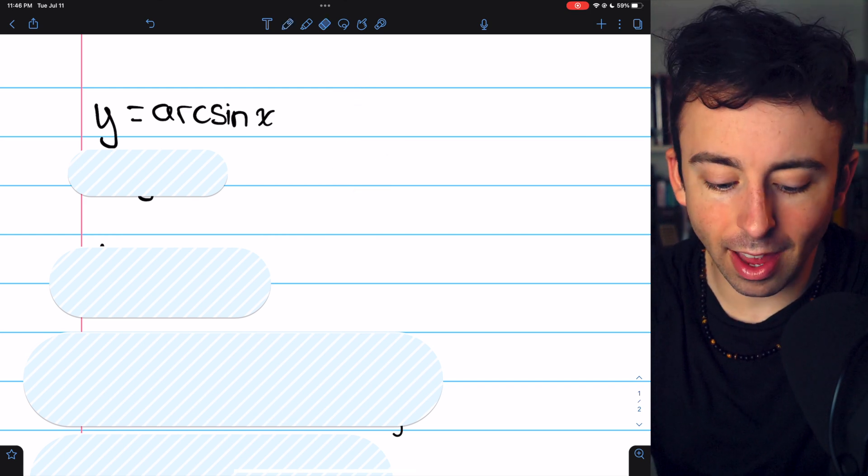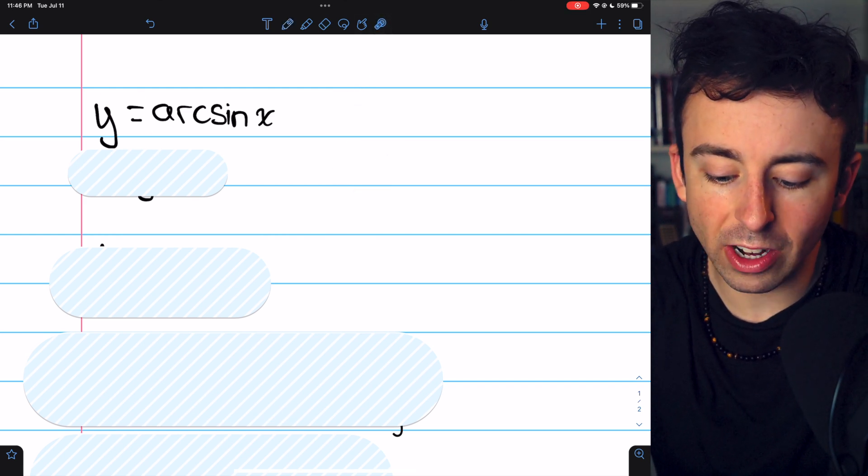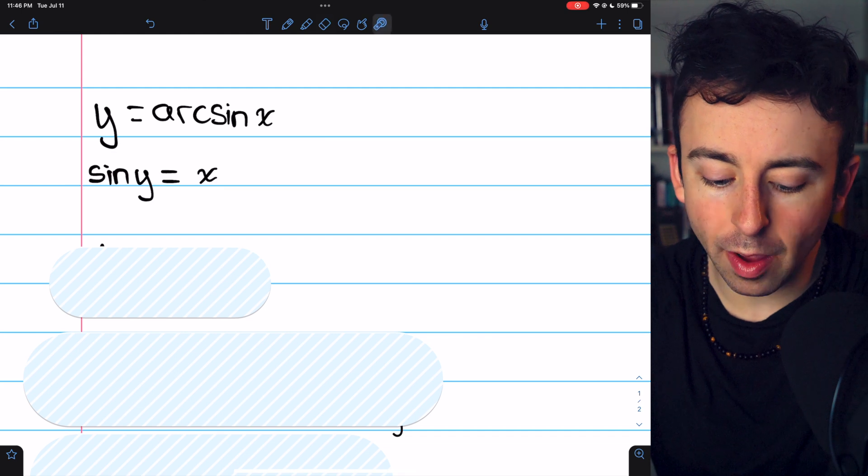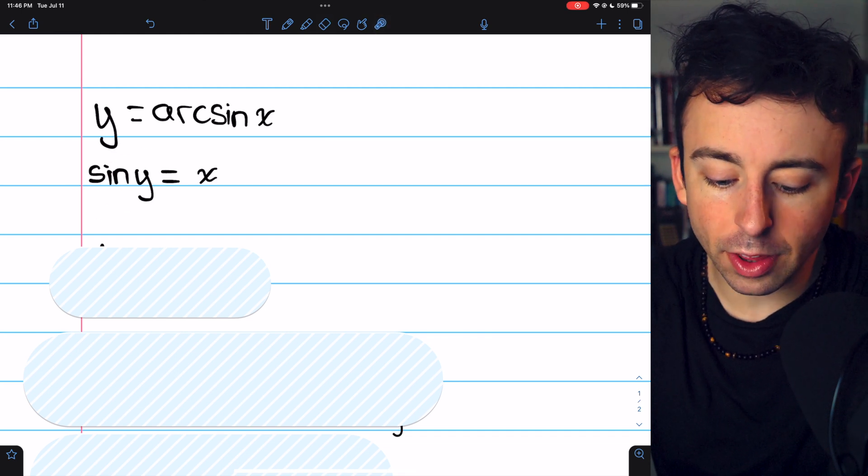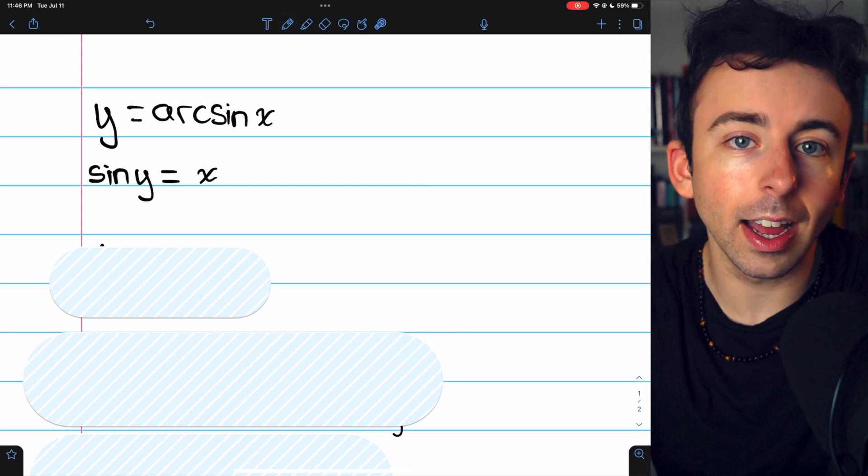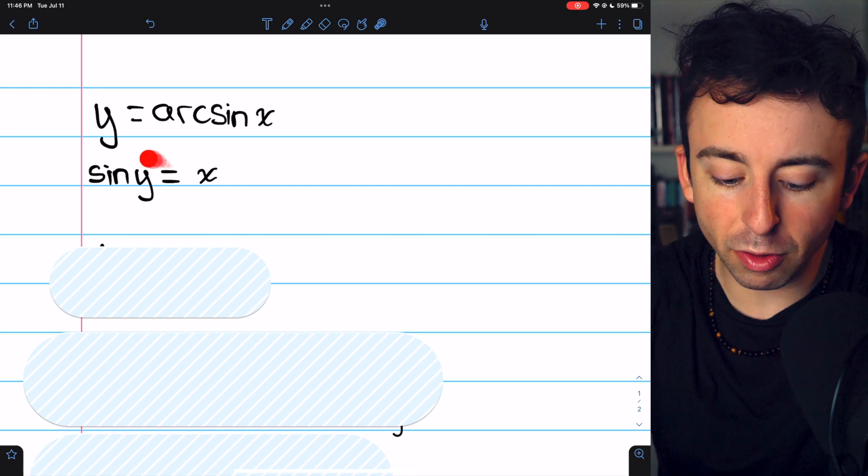Our first step is to take the sine of both sides of this equation. That way, on the left, we'll have sin(y), and on the right, sine of arcsin(x) is just x, because sine and arcsin are inverses. So this is much better.